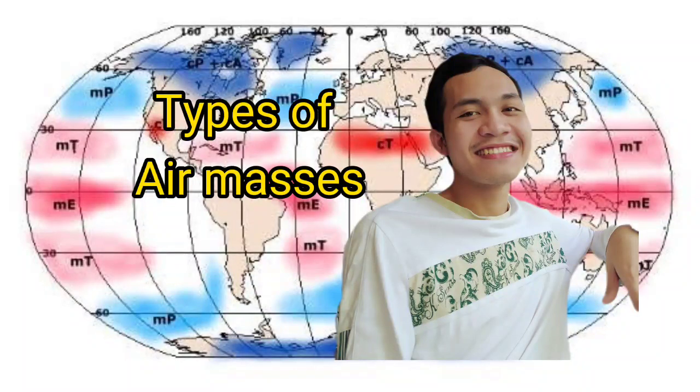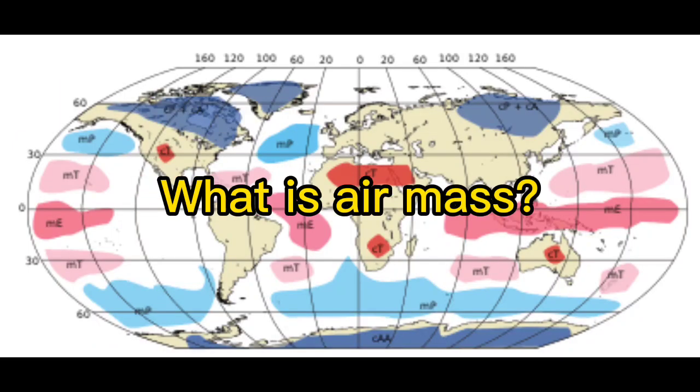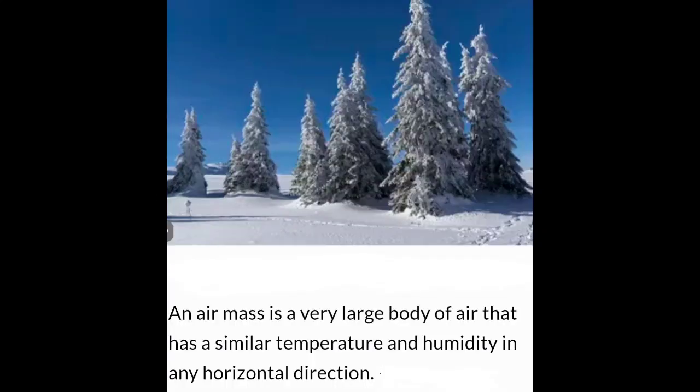Types of air masses. An air mass is a very large body of air that has similar temperature and humidity in any horizontal direction.